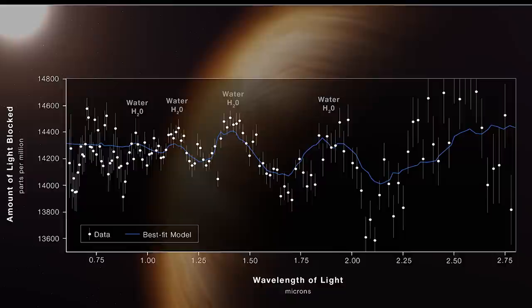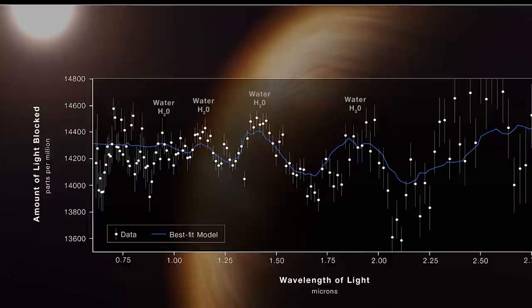This part of the spectrum is particularly sensitive to water and other key molecules such as oxygen, methane, and carbon dioxide, which are not immediately evident in the WASP-96b spectrum but should be detectable on other exoplanets.